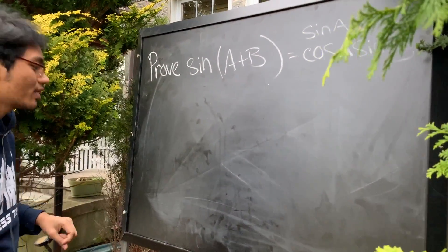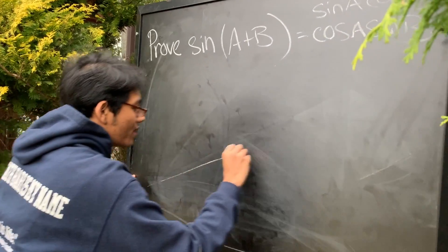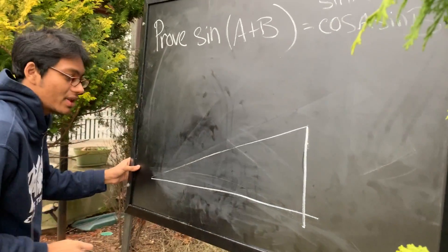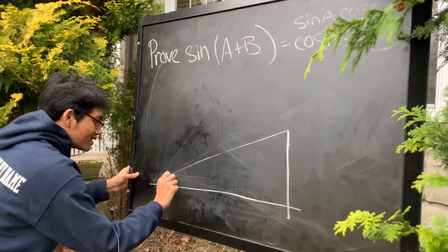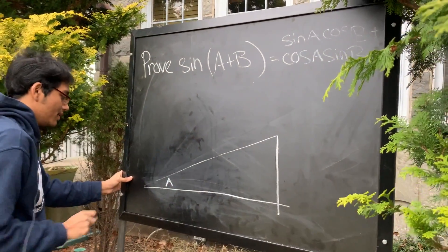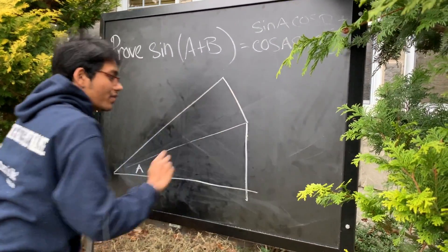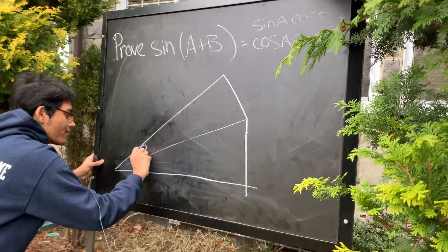Okay, so how do we get started? Well, since we're dealing with a trigonometric function, we should get started with a right triangle. All right, so here's my right triangle, and let's call this angle A. And let's say I have another right triangle on top of this, and let's call this angle B.